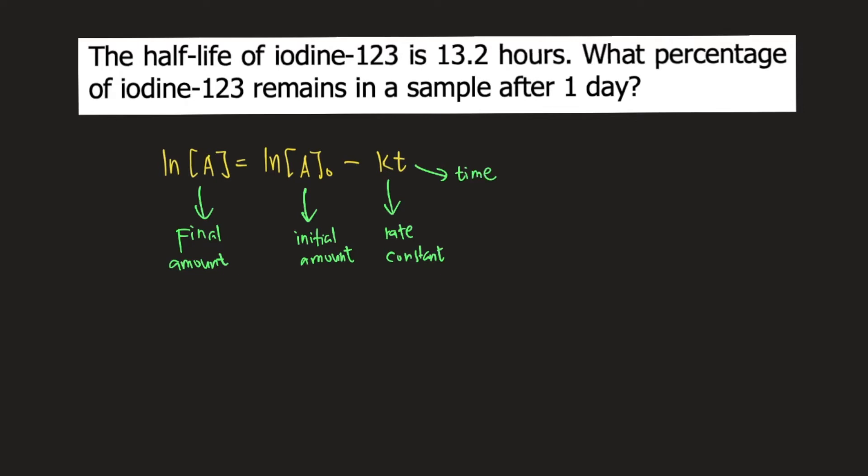When you read the problem, the problem does not give you the rate constant. Instead, it gives you the half-life of iodine-123. We know that half-life and rate constant for first-order kinetics is related by the following formula.